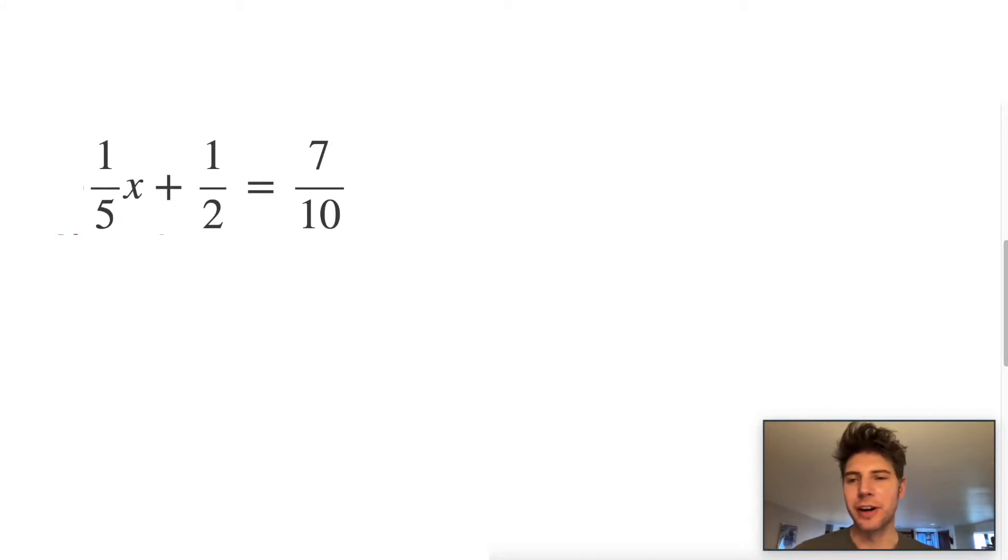Hey guys, welcome to this video. We're going to solve for x in this equation. The fractions are kind of annoying, so we just want to get rid of that denominator. The easiest way to do that is to multiply by whatever the least common denominator would be. So for 5, 2, and 10, it's 10. 10 is what each of these numbers will go into.